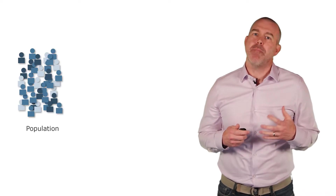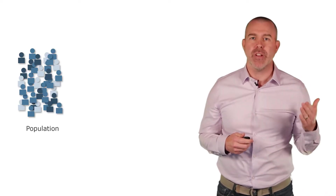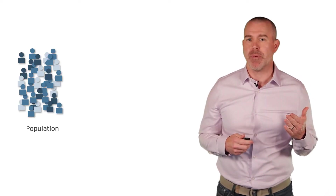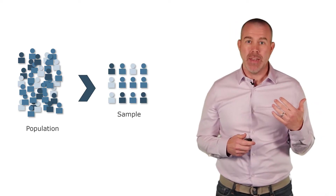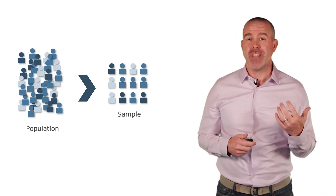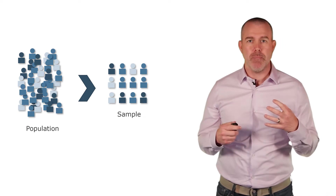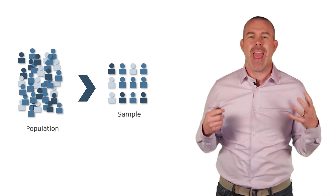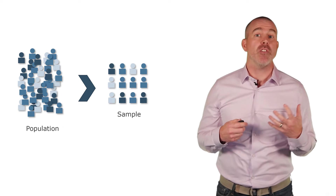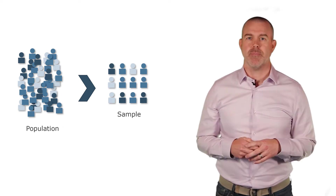So let's first talk about what random sampling is. If we have a question we want to answer, we typically can't look at every individual in the population. So what we want to do is select a random and representative sample — one that is small enough to actually analyze and collect data from, but that also represents the population.